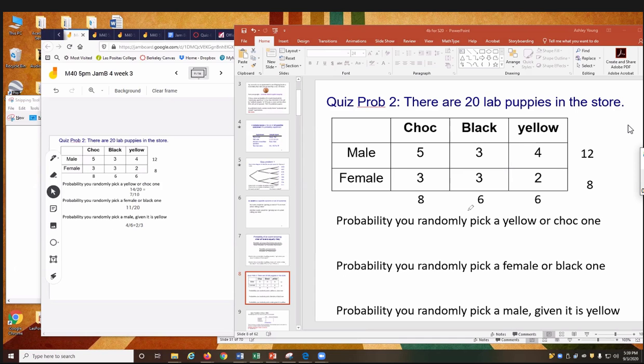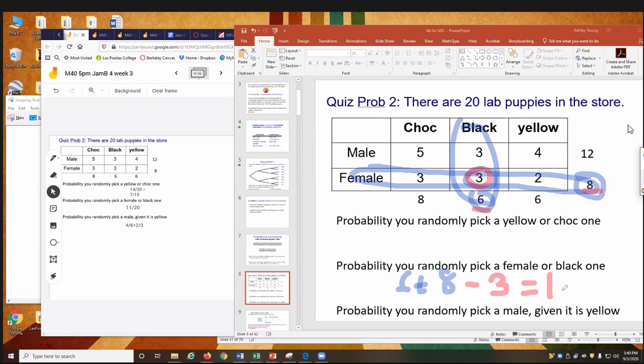How about the next one? A female lab or a black lab. So these are the black labs. These are the female labs. So we have our 6 and our 8. But here's the thing. Do you guys see these, this three right here? I'll try to pick a different color. These three right here. They're being counted in this 8. They're also being counted in this 6. They're being counted twice. So they're being double counted. We have to subtract off one of them. So they're only being counted one time. It's not fair to count them twice. So 6 plus 8 minus 3. That's 11. So like they had here, 11 out of 20. Good?